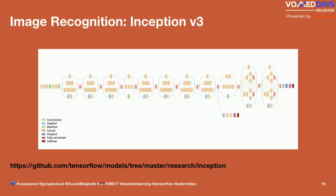We don't always have to do the hard work of training a model on our own. There are pre-trained models already available — think of them like a package or library, but for machine learning. There is a model for understanding and classifying images called Inception, and the latest version is version 3. It's called Inception because you have to name things.